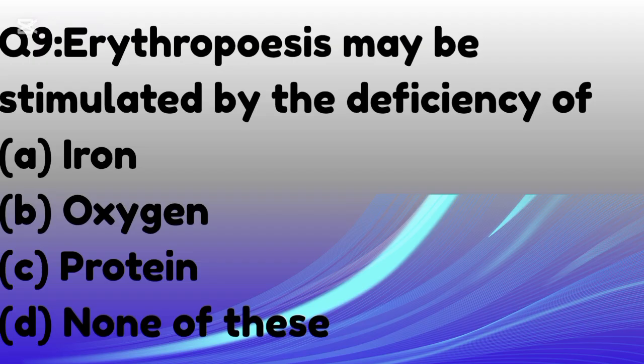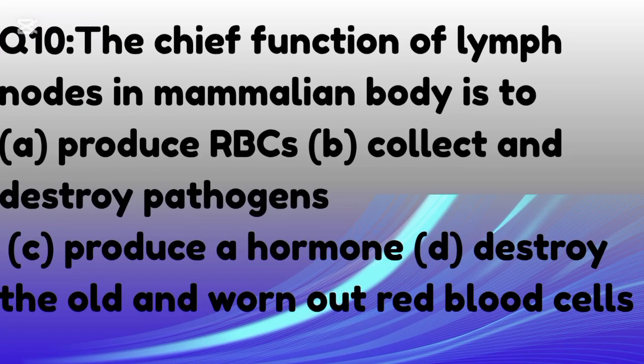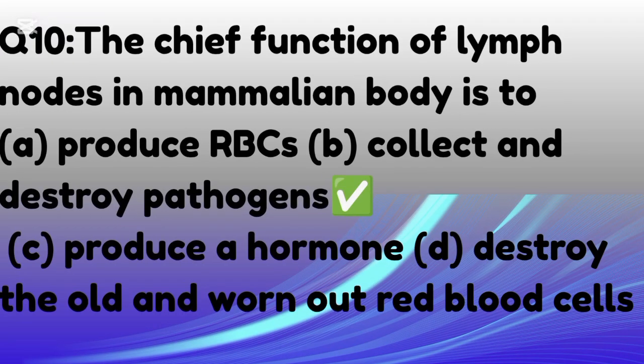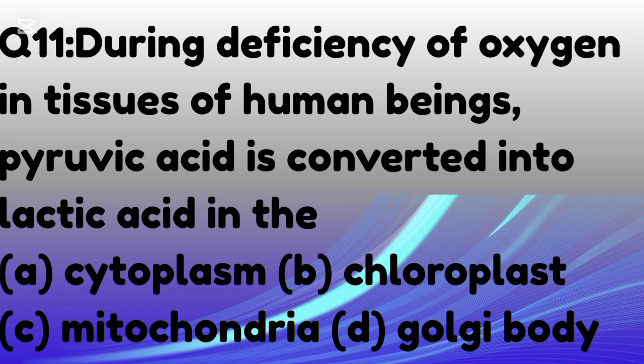Erythropoiesis may be stimulated by the deficiency of — the correct option is B: oxygen. The chief function of lymph nodes in the mammalian body is — the correct answer is B: to collect and destroy pathogens.